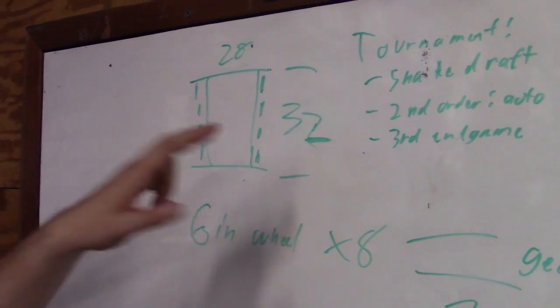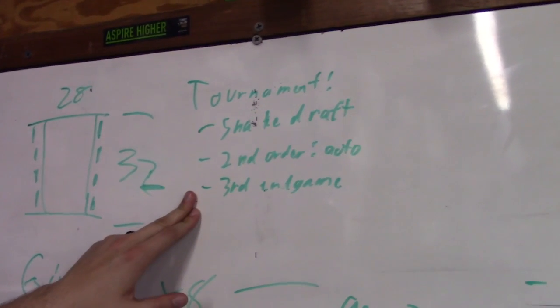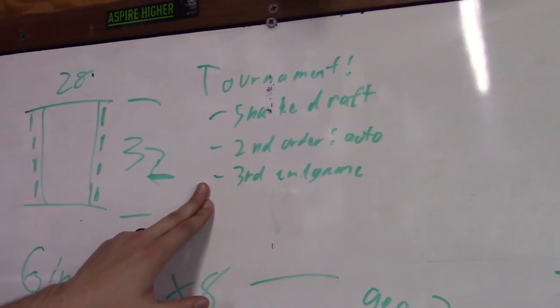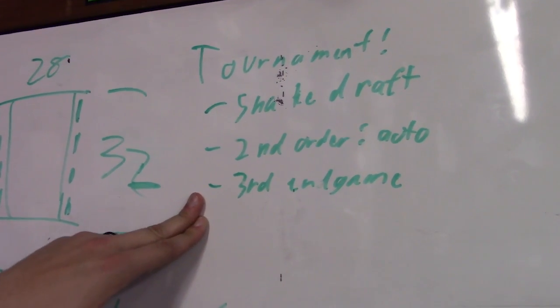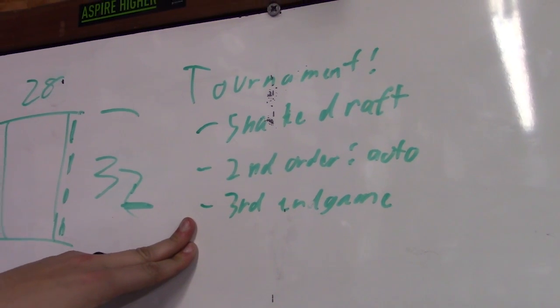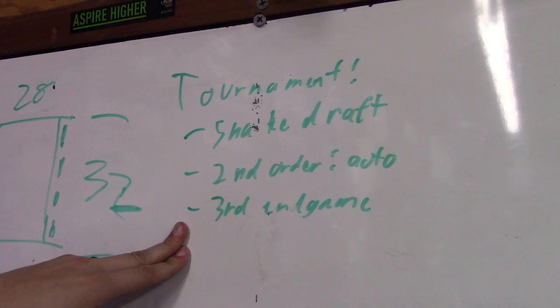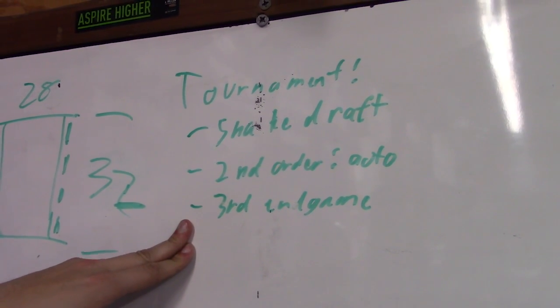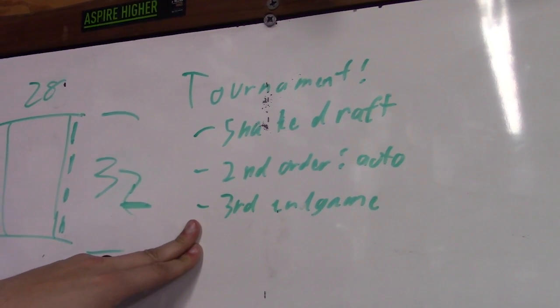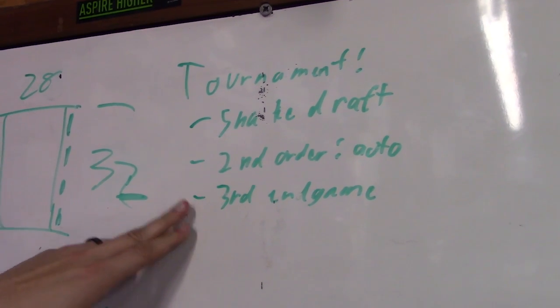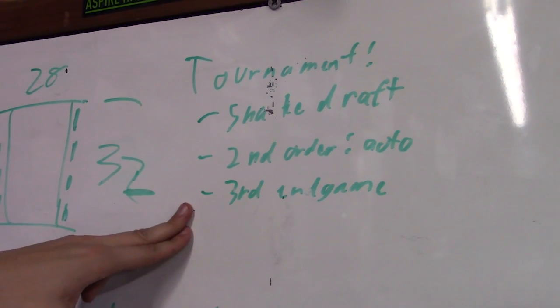So when designing the robot we looked at the tournament structure. The second order sort is autonomous, which auto is also the second order sort for tiebreaker behind fouls and the second order sort when you actually get to working with the Einstein round robin.